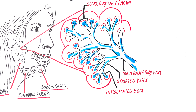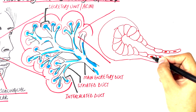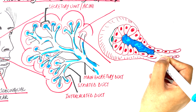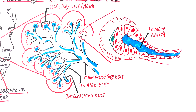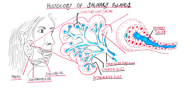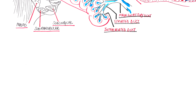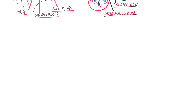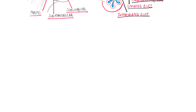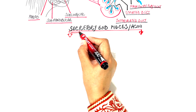The end pieces — either serous or mucus — on a closer cross-sectional view look like a group of cells surrounding a central hollow cavity filled with primary saliva. The acini or secretory end pieces of serous and mucus cells differ in structure and in the types of macromolecular components they produce and secrete. The acini are either serous acini or mucus acini.